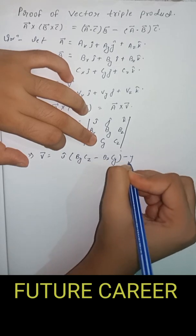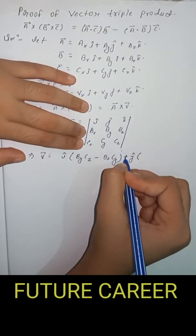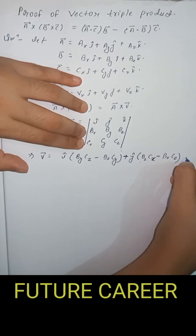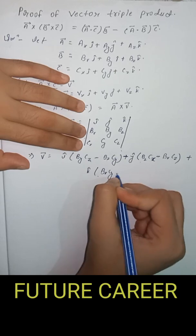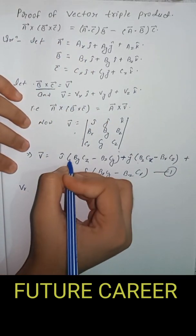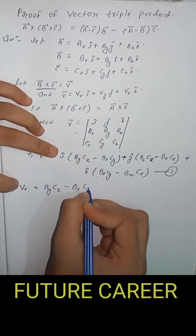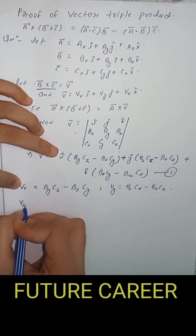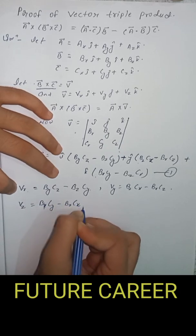Continuing the determinant expansion: minus j cap into Bx Cz minus Bz Cx, plus k cap into Bx Cy minus By Cx. So Vx equals By Cz minus Bz Cy, Vy equals Bz Cx minus Bx Cz, and Vz equals Bx Cy minus By Cx.